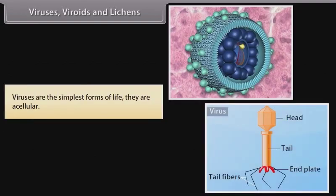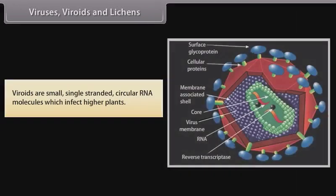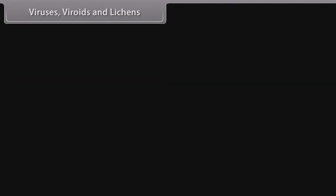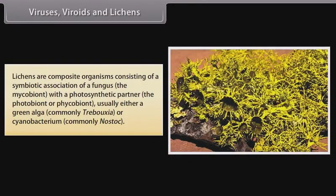Viruses are the simplest forms of life. They are acellular. Viroids are small single-stranded circular RNA molecules which infect higher plants. Lichens are composite organisms consisting of a symbiotic association of a fungus — the mycobiont — with a photosynthetic partner, the photobiont or phycobiont, usually either a green algae, commonly Trebouxia, or a cyanobacterium, commonly Nostoc.